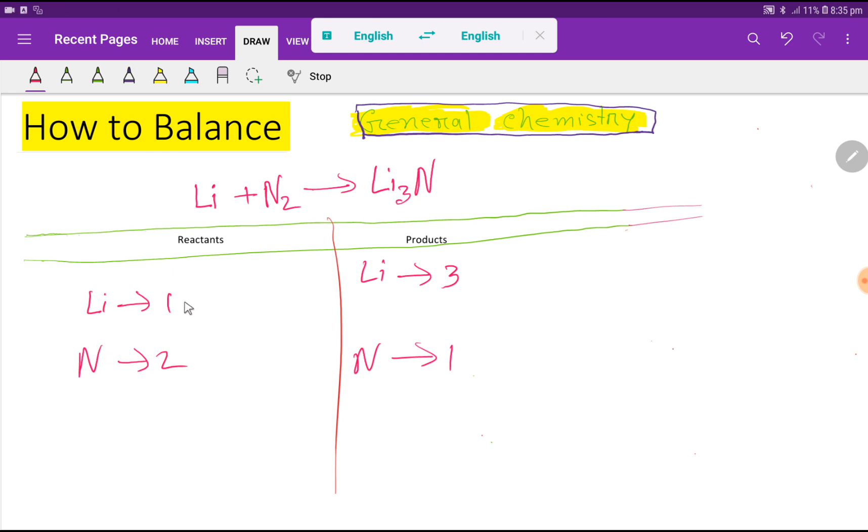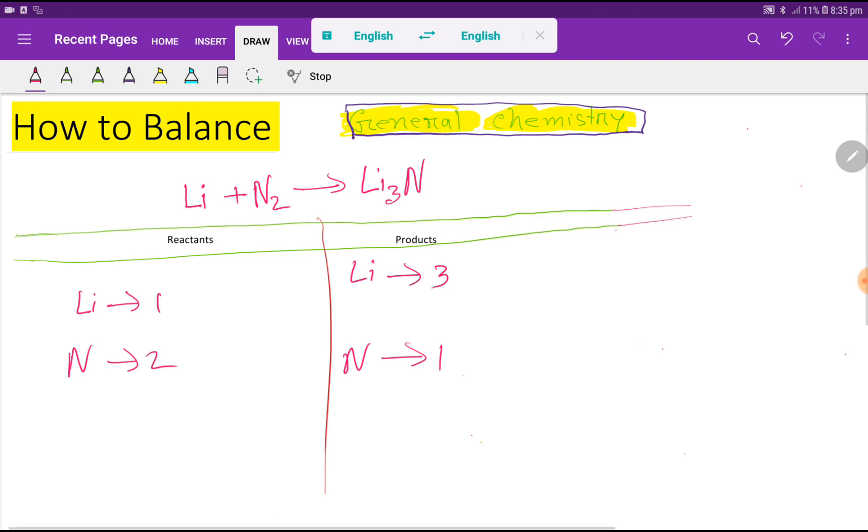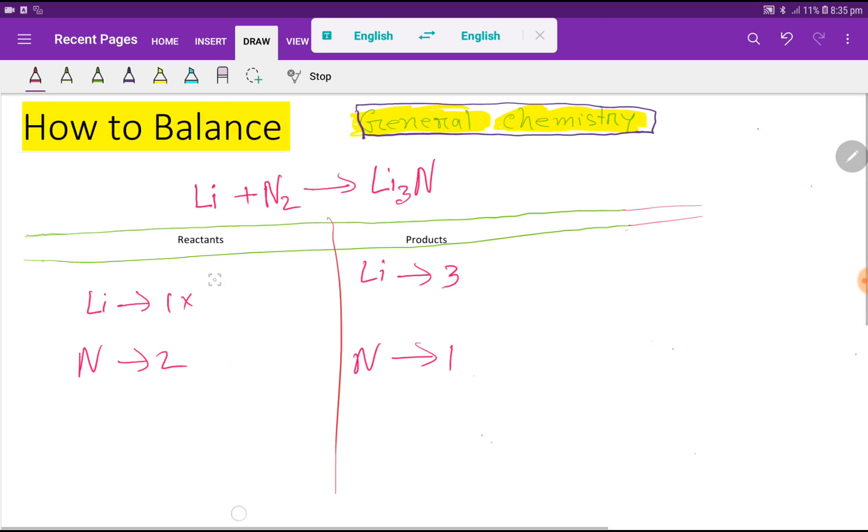So to balance the lithium, I can multiply here by 3 that gives me 3. This 3 must come before this lithium, that is here. Look, our lithium 3, 3 is balanced, but our nitrogen is not balanced. Here 2, here 1.